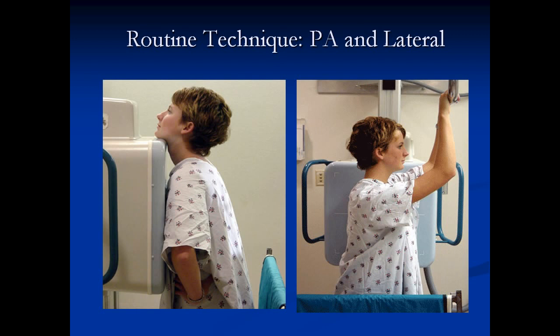The closer the heart is to the film, the better idea we're going to get of its size. The second image on the right is the lateral — how we take a lateral film. You can see that her left side is up against what we call the Bucky, or the image detector. When we take this film, the x-ray comes from where you're standing, passes through the patient to hit the detector on the other side. So those are the standard ways that we take a view of the chest.